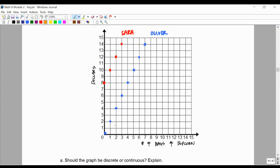So this is the graph. It's a discrete graph with Oliver being proportional and Sarah being non-proportional.